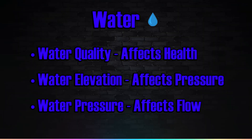When it comes to water, we need to keep in mind three things: water quality, water elevation, and water pressure. Water quality affects the health of our people — the better the quality, the healthier they are — and a lot of industry requires specific levels of water quality to operate. Water elevation affects the pressure, as water always flows downhill and tries to equalize like regular water. And water pressure affects how much water can flow through a pipe.